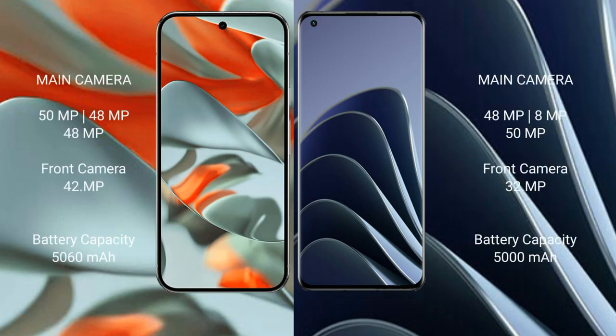Google Pixel 9 Pro XL features a triple rear camera setup: 50MP plus 48MP plus 48MP, and a 42MP front camera. OnePlus 10 Pro features a triple rear camera setup: 48MP plus 8MP plus 50MP, and a 32MP front camera.